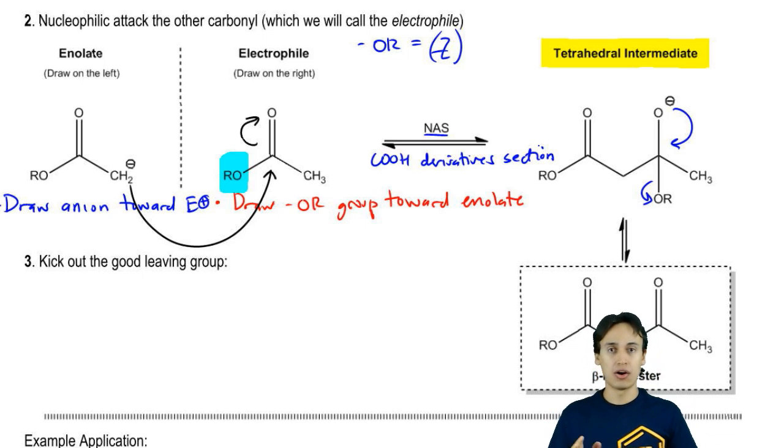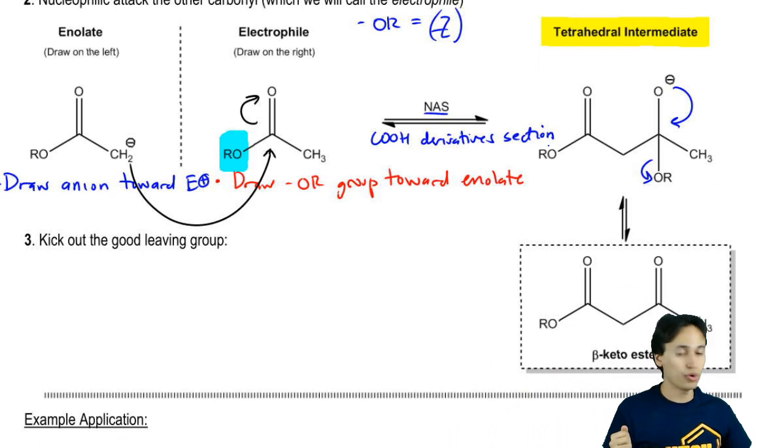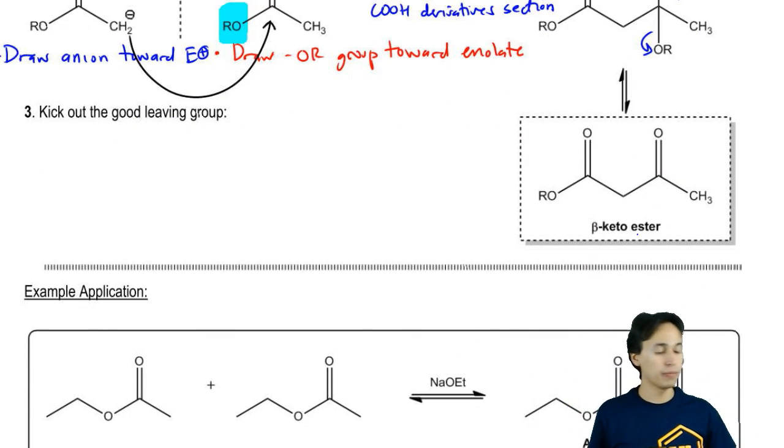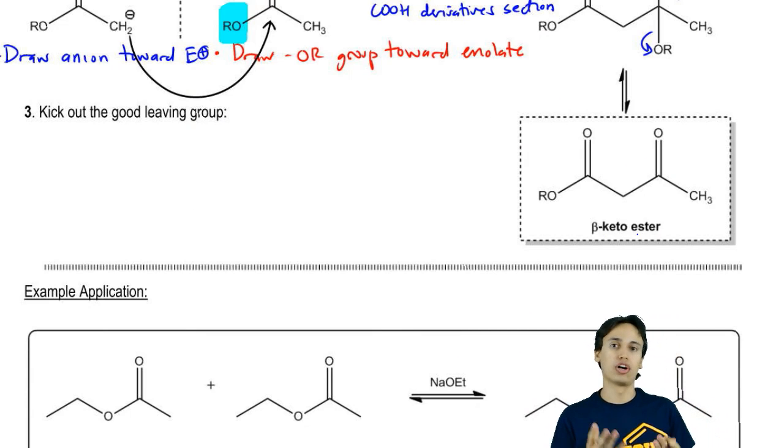What's interesting here is that now what we've created is we've kind of blended two mechanisms into one because we decided to substitute the alpha position of my enolate. That's what we're trying to go for. But we're doing it through an NAS. What we wind up getting is a beta-keto ester.